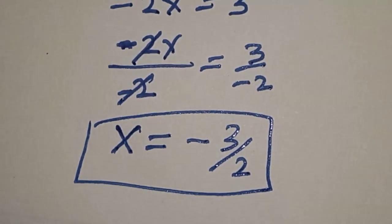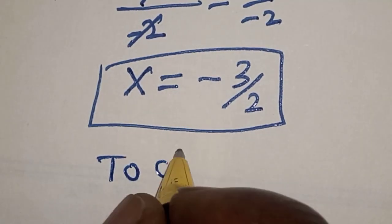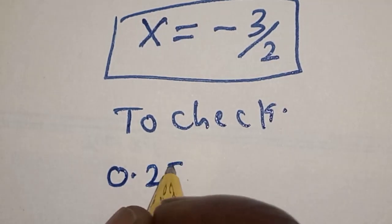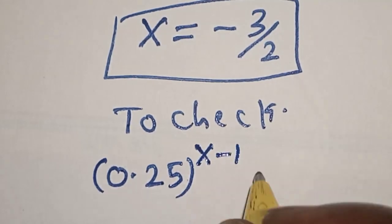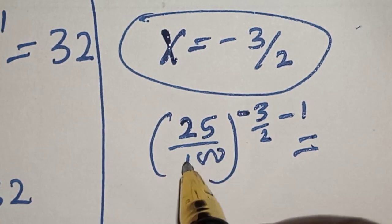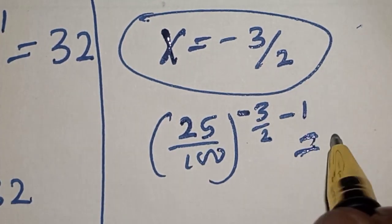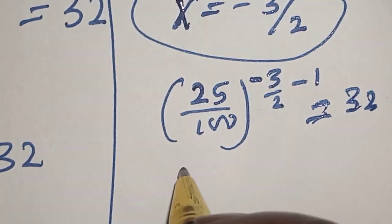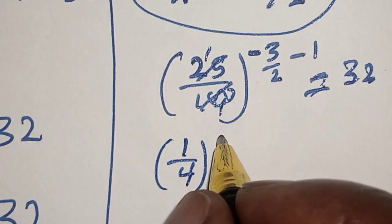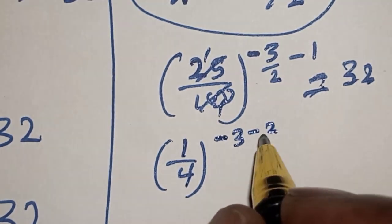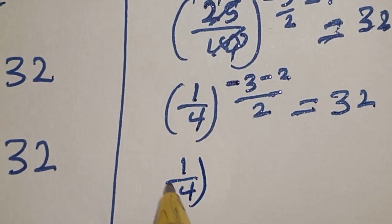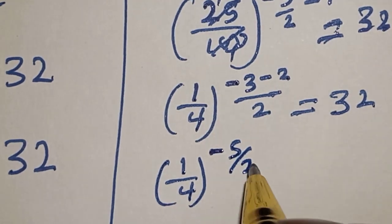Let's check to confirm if our answer is right or wrong. We substitute s equal to minus 3 over 2 back into 0.25 raised to power s minus 1 equals 32. This gives 25 over 100 raised to power minus 3 over 2 minus 1, which simplifies to 1 over 4 raised to power minus 5 over 2.